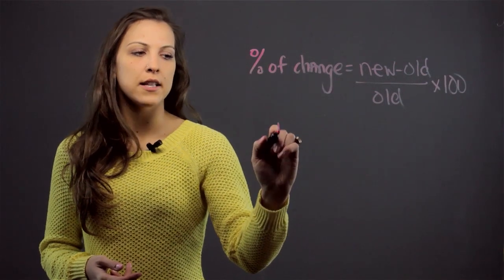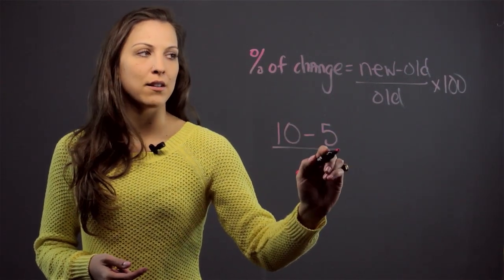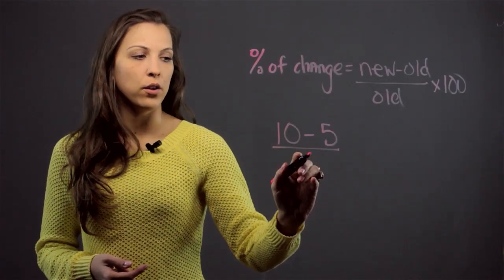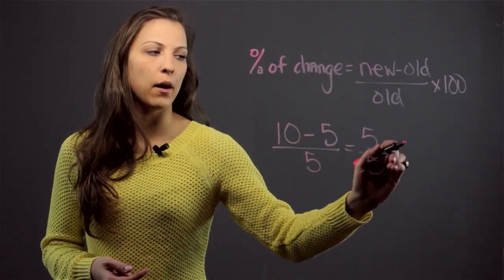We're going to take the new value, which is $10, minus the old value, which was $5, and then we're going to divide that by the old value, which was $5. So we have 10 minus 5 is 5, over 5, and we get 1.